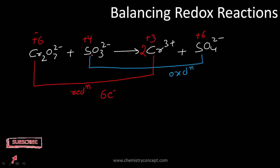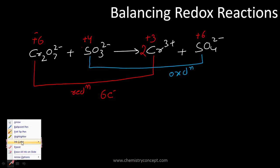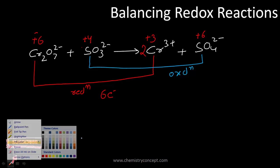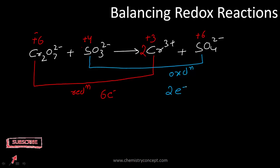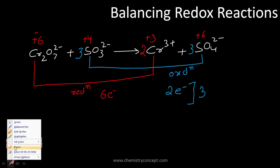On the oxidation side, sulfur goes from +4 to +6, meaning a transfer of 2 electrons. In a redox reaction, the electrons produced by oxidation must equal those used in reduction. So we multiply the sulfur side by 3, giving 3 SO₃²⁻ on the reactant side and 3 SO₄²⁻ on the product side — now both sides involve 6 electrons.